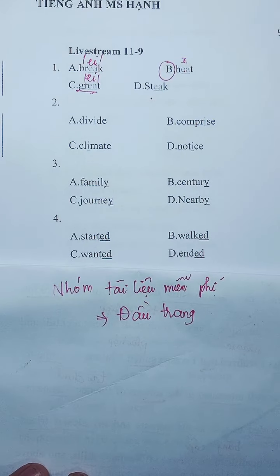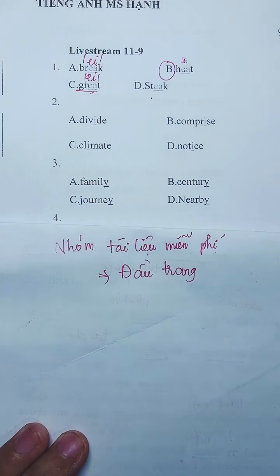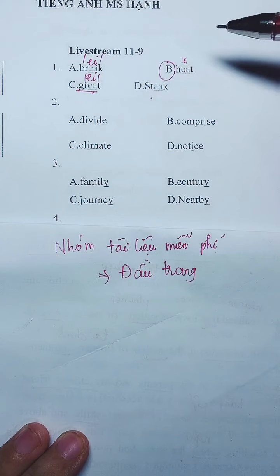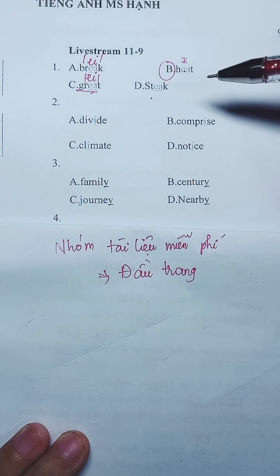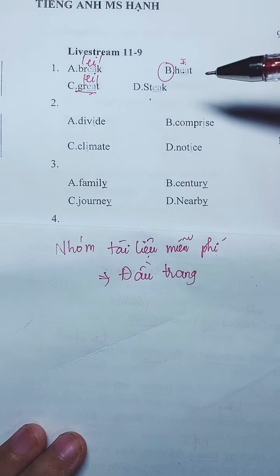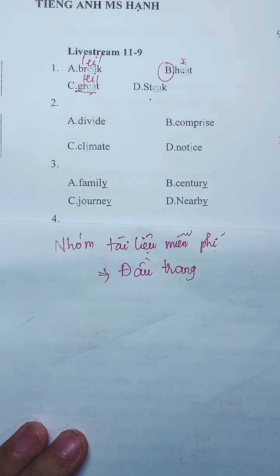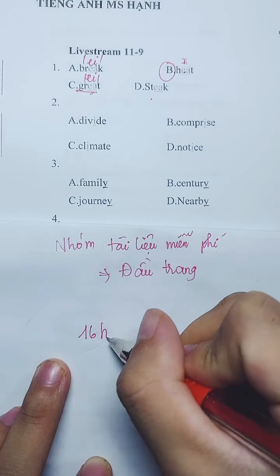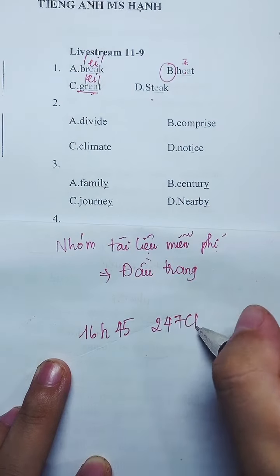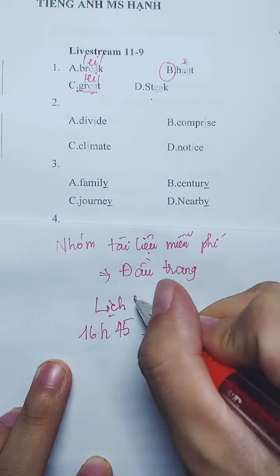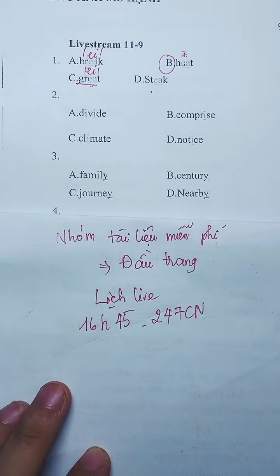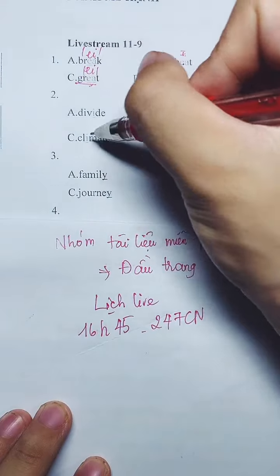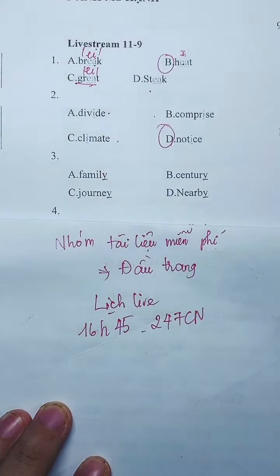Bây giờ mình qua câu số 2. Cách làm tương tự, đọc 3 cái. Từ nào không biết đọc thì bỏ qua, đọc 3 cái mình biết thôi. Mình có A là 'Divide', B là 'Comprise'. Mình có đáp án C và D. Mình có từ 'Climate' - đúng rồi. Vậy 3 cái này giống nhau, mình chọn cái cuối cùng, chắc chắn là đáp án.